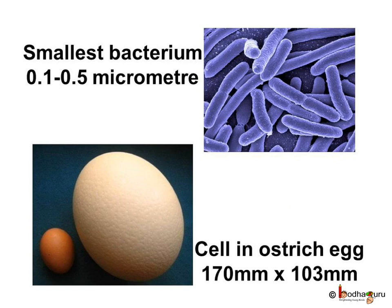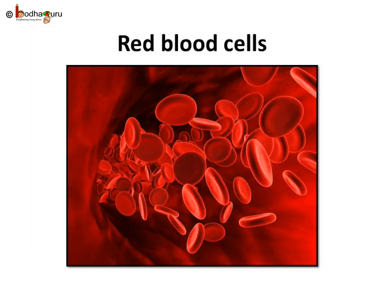The sizes of all cells are not the same. The smallest cell is 0.1 to 0.5 micrometers in bacteria. If we divide a meter into a million equal parts, then one part is a micrometer — so imagine how small a bacterium is. On the other hand, the cell in the egg of an ostrich can be as big as 170 millimeters by 130 millimeters. That's quite huge!